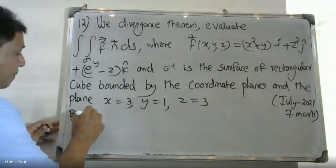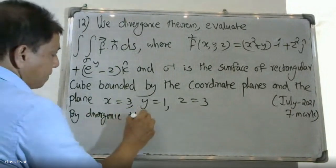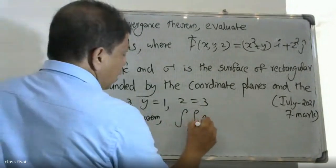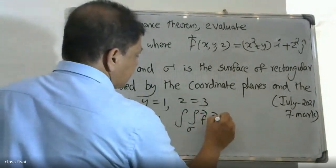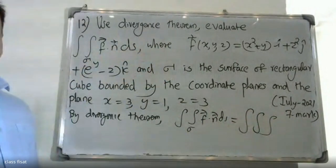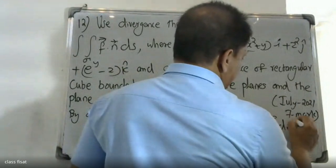By Divergence Theorem, the double integral over sigma of F dot n dS is equal to the triple integral of div F dV.